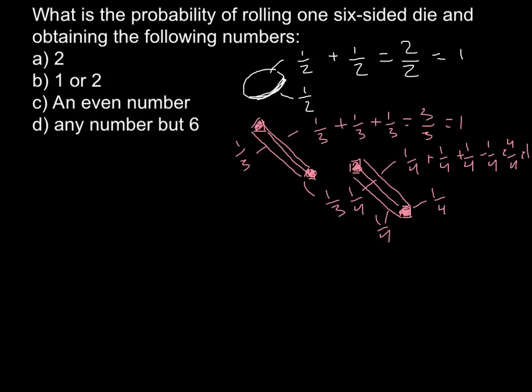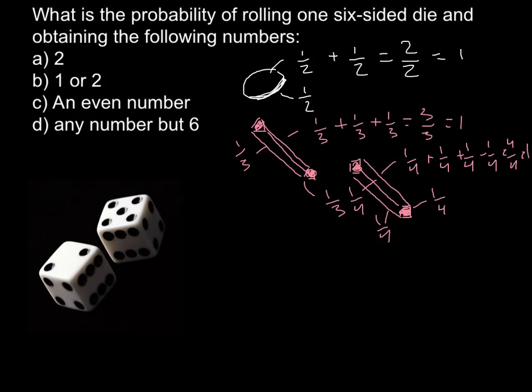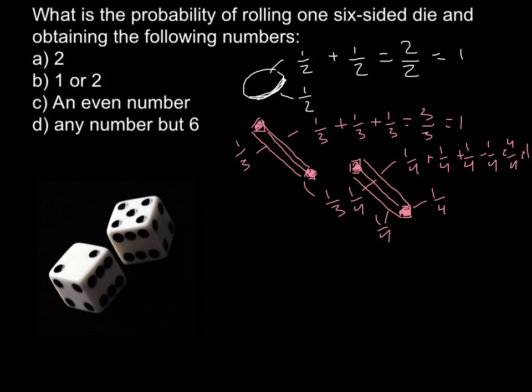So now I want to return to our problem, and here is a die. If you count, a die has three sides that are visible here, and we do not see the other three sides, so this is six sides. We can express it like one sixth plus one over six plus one over six plus one over six plus one over six plus one over six.